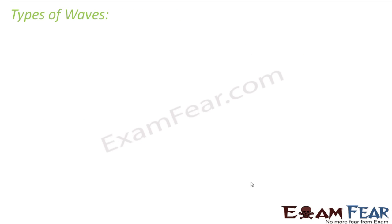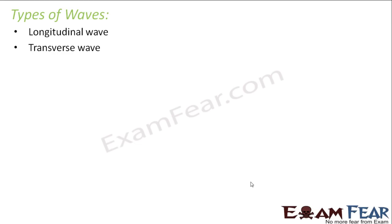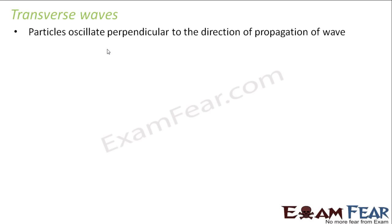Now when I talk of longitudinal waves, you might be wondering: is it possible for particles to oscillate in a direction perpendicular to the direction of propagation of the wave? Yes, that is also possible. On this basis, waves are categorized into two types: longitudinal waves and transverse waves. In longitudinal waves, the particles of the medium oscillate parallel to the propagation of the wave, whereas in transverse waves, the particles oscillate perpendicular to the direction of propagation.